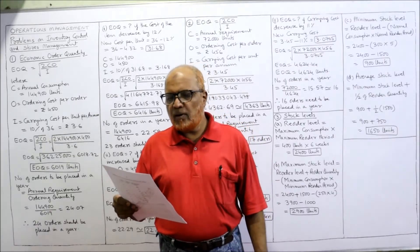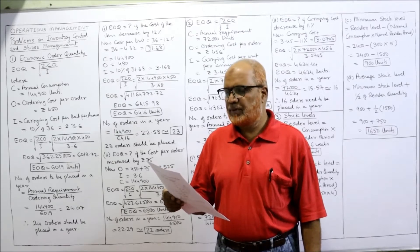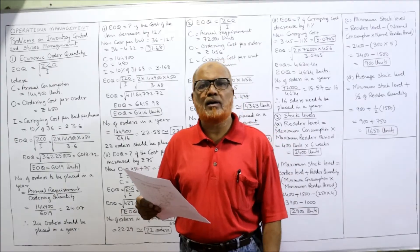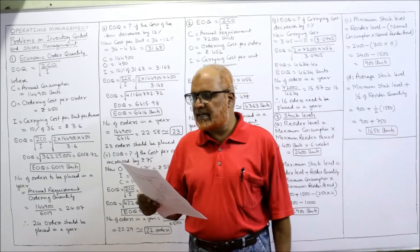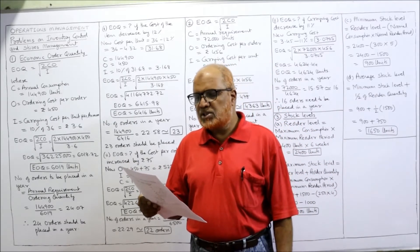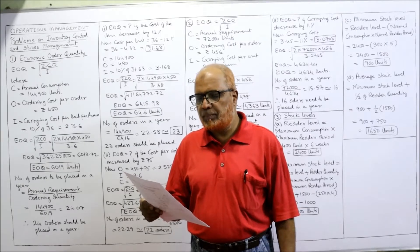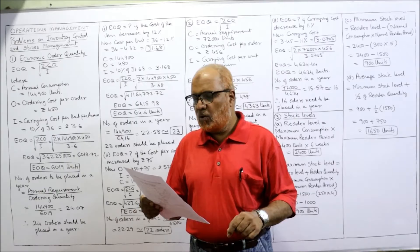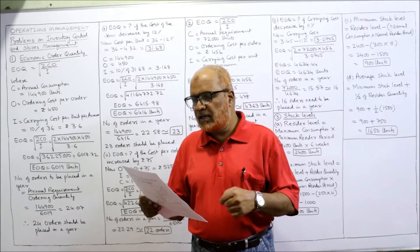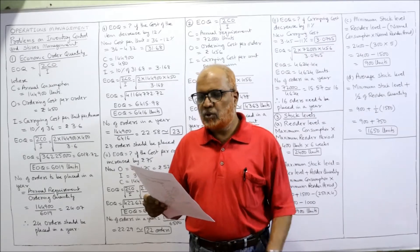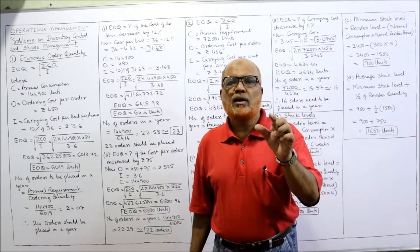The first problem: the annual requirement of an item in a firm is 144,900 units. The cost of placing an order is Rs. 450, and the carrying cost per unit per annum is 10% of the cost of the item. The cost per unit is Rs. 36. You are required to find out the EOQ and the number of orders to be placed in a year, and also when the cost of the item decreases by 12% and the cost of the order increases by Rs. 75.